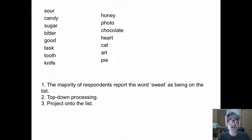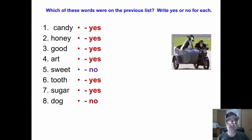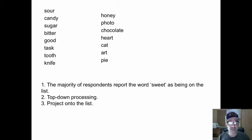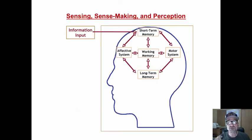Most people thought the word sweet was on the list. Why? Top-down processing. These all relate to sweet things. So we use what's in our head to fill in the blank. And we thought, oh yes, that must be there. Top-down processing we project onto the list.